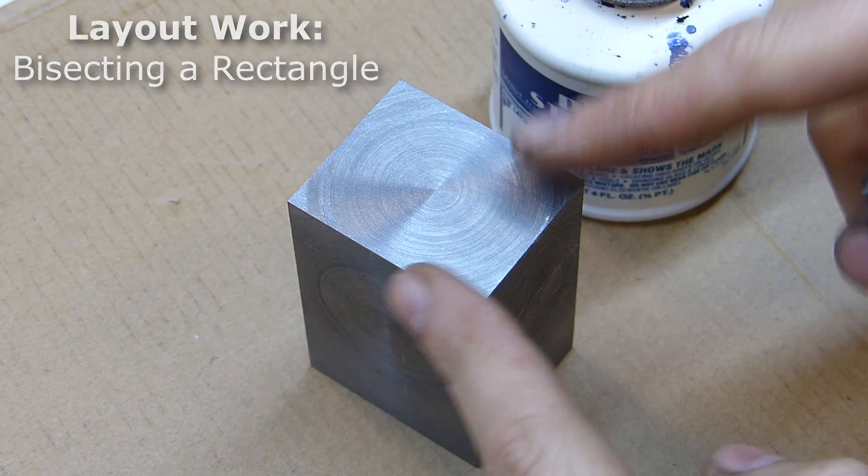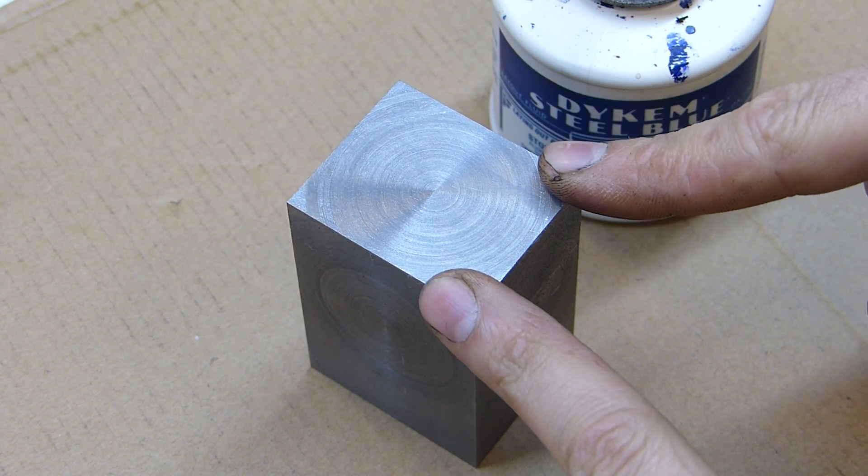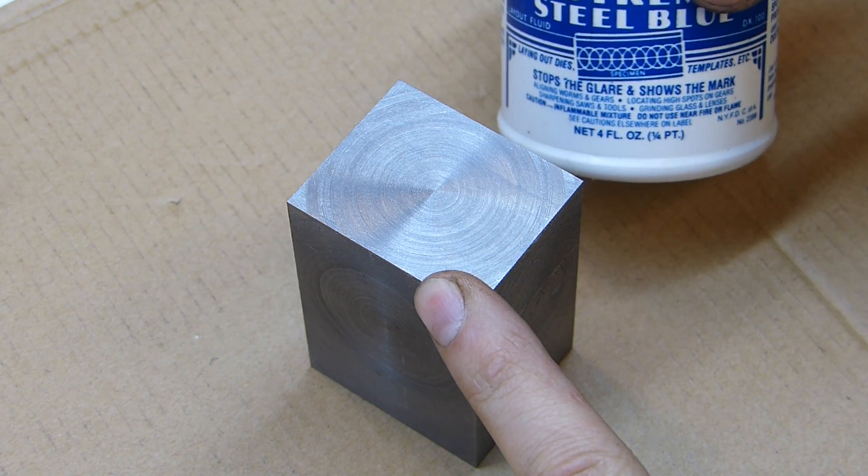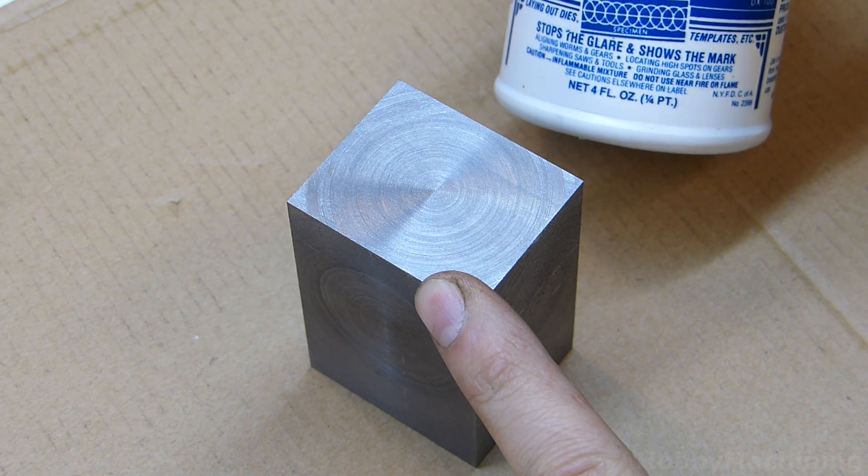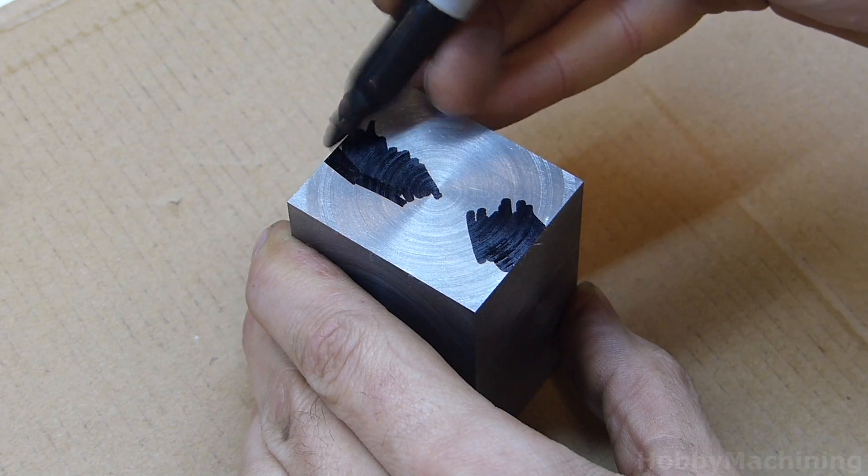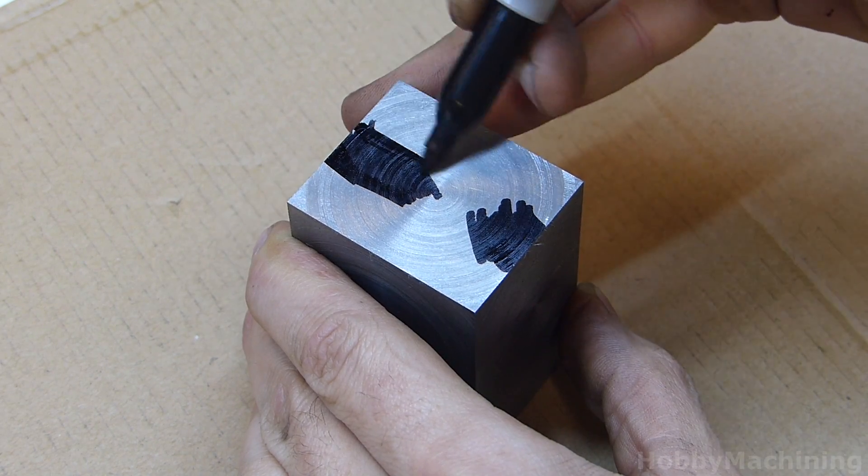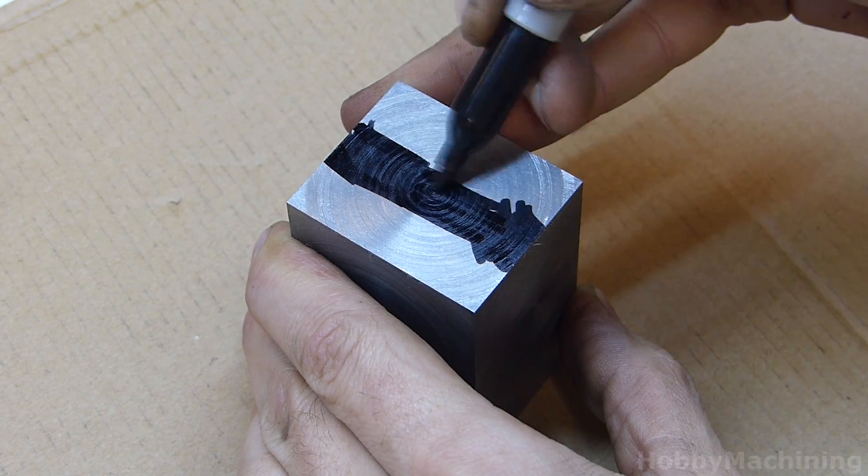Doing some layout work, I want to scribe a line down the exact center of this surface. This bottle of layout fluid has gone bad, which leaves me with permanent marker. I'm using the marker to fill in the area that I want to scribe lines on.